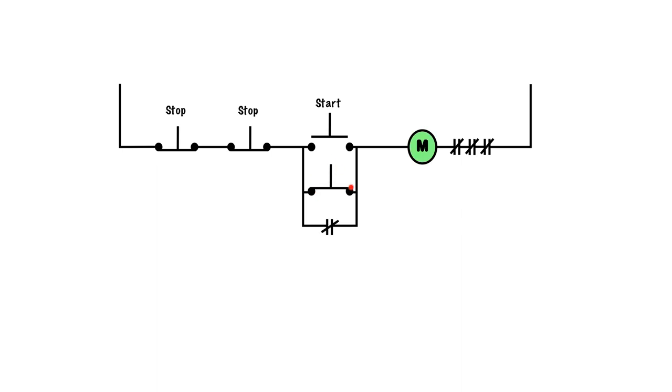Now let's press down on the second start pushbutton that's at a different station. When we press down on that, power can come through. It can't go across this start, but it can go down and go through this start, which will energize the coil, which will close these contacts and go through and go out the other side. When I let go and the normally open bounces back to its normally open position, these sets of contacts are closed, and therefore it holds it in, and M stays energized.